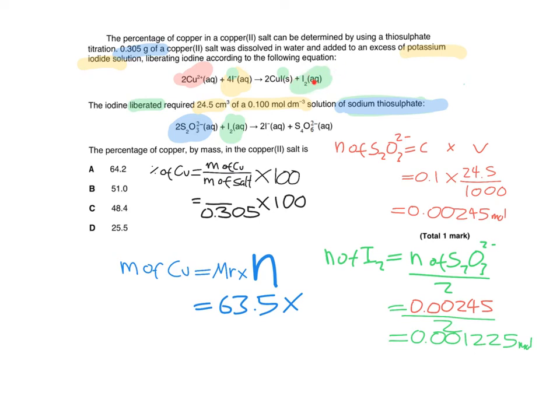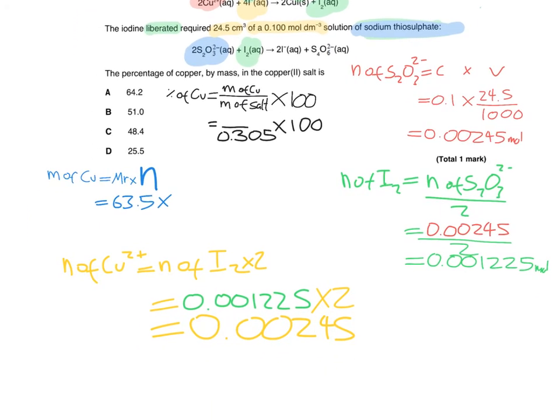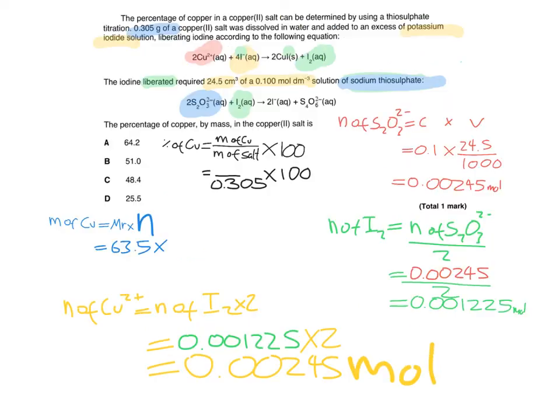We can use molar ratios to work out how many moles of copper must have been used up. So the moles of copper 2+ equals the moles of I₂ times 2, because divide by 1 times by 2. So looking down here, we can see that equals our moles of I₂ times 2 equals 0.00245 mole. Now we've got the moles of copper, we can take it back into this original equation here. So let's add it into there. So those times 0.00245 times the Mr will give us the mass of copper.